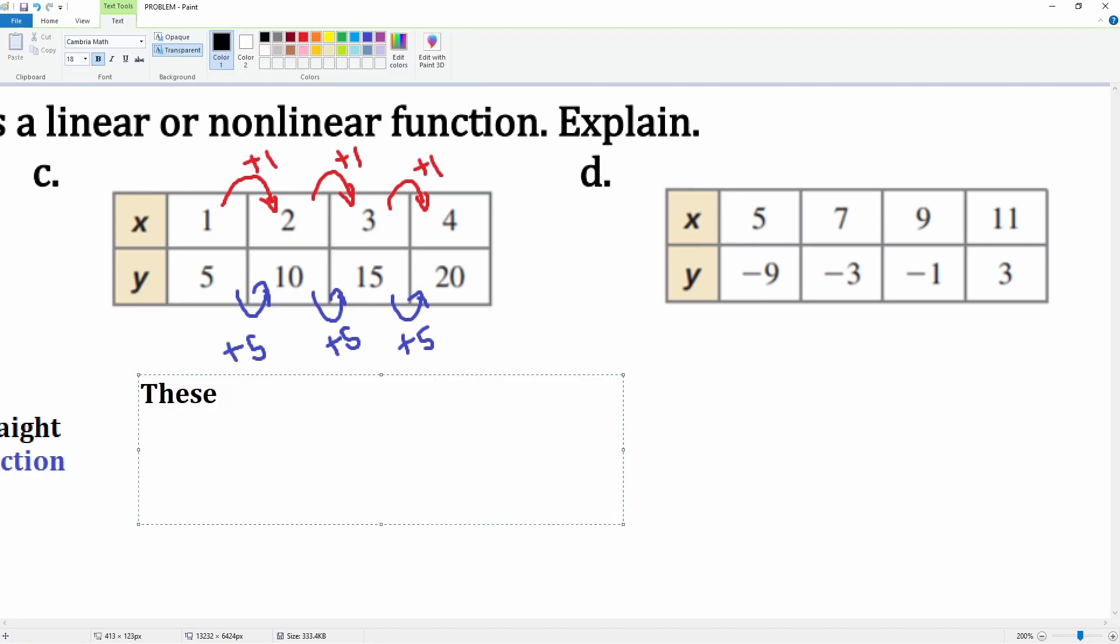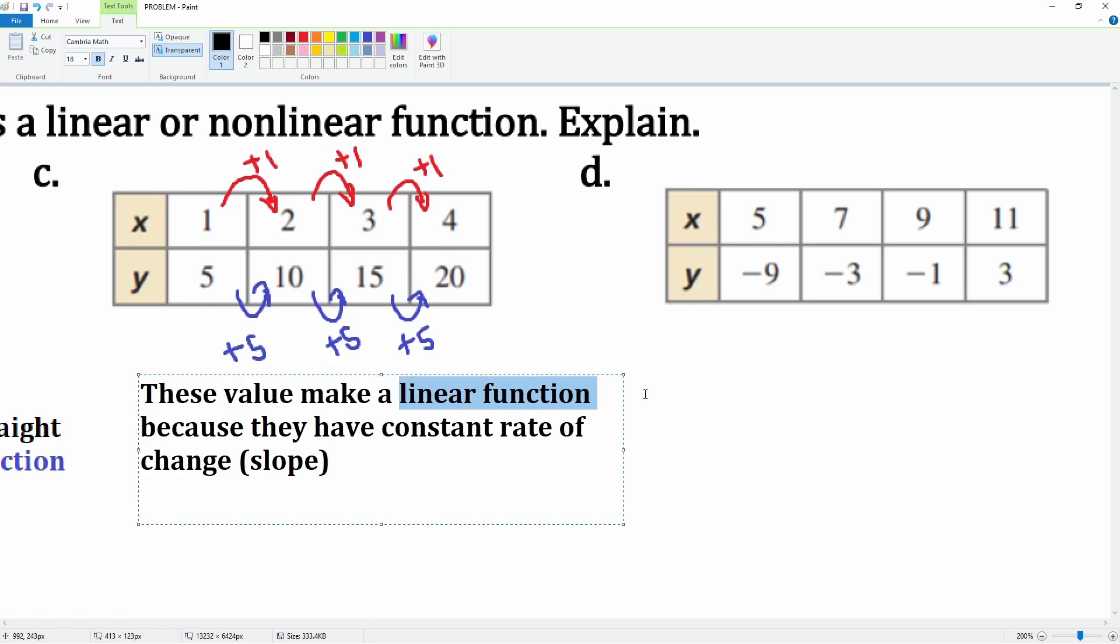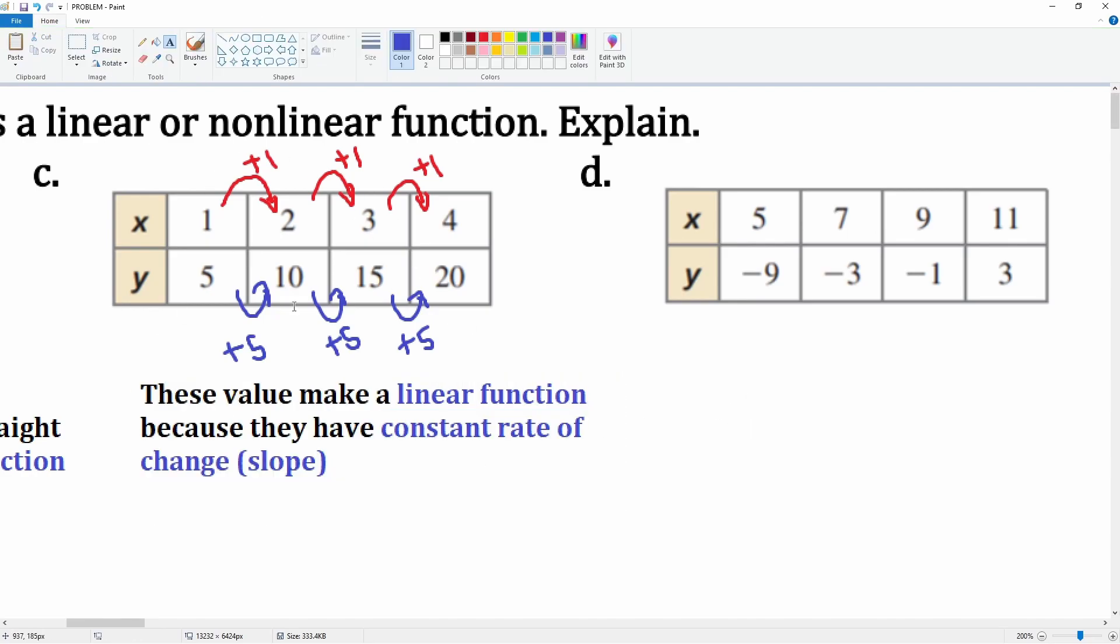These values make a linear function because they have a constant rate of change. Rate of change is also another word for slope. So it is a linear function because they have a constant rate of change or slope. That is the explanation.